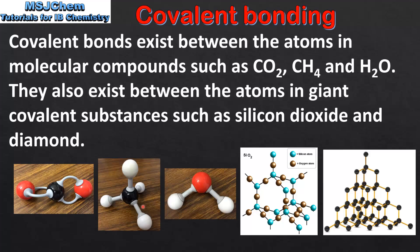Methane and water both have single covalent bonds between the atoms, whereas carbon dioxide has double covalent bonds. On the right we have two giant covalent substances: silicon dioxide and diamond. The atoms in giant covalent substances are also bonded with covalent bonds, however giant covalent substances have different properties to molecular compounds. These differences will be covered in a later video.